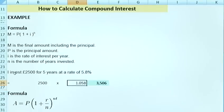The 1.058 is simply the 1 plus the interest rate, so 1 plus 0.058. So now we'll compare that to the compound interest using the same figures.